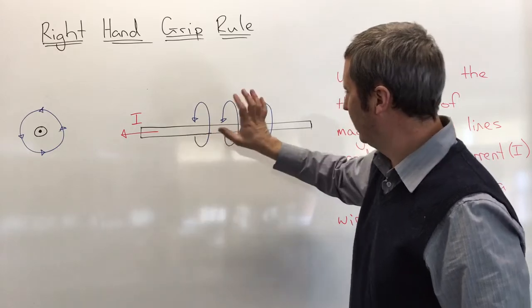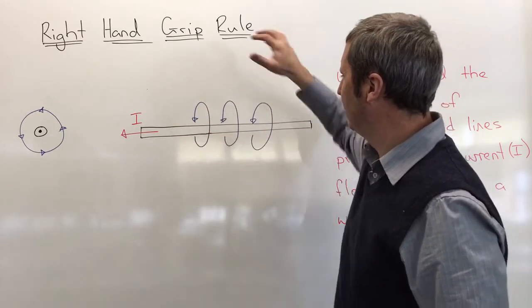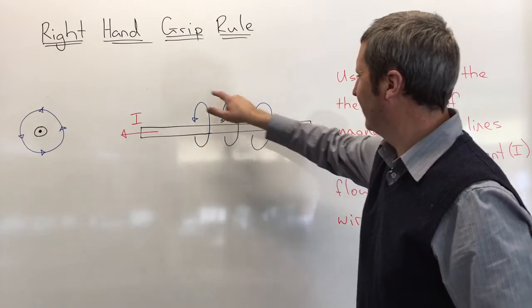So here we can see the magnetic field lines come out and around this wire. We come out and around.